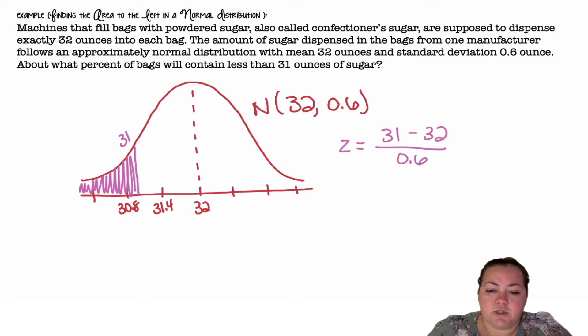I'm going to go ahead and find the z-score, so z is equal to 31, my value, minus 32, the mean, divided by 0.6, the standard deviation, gives me a z-score of negative 1.67.